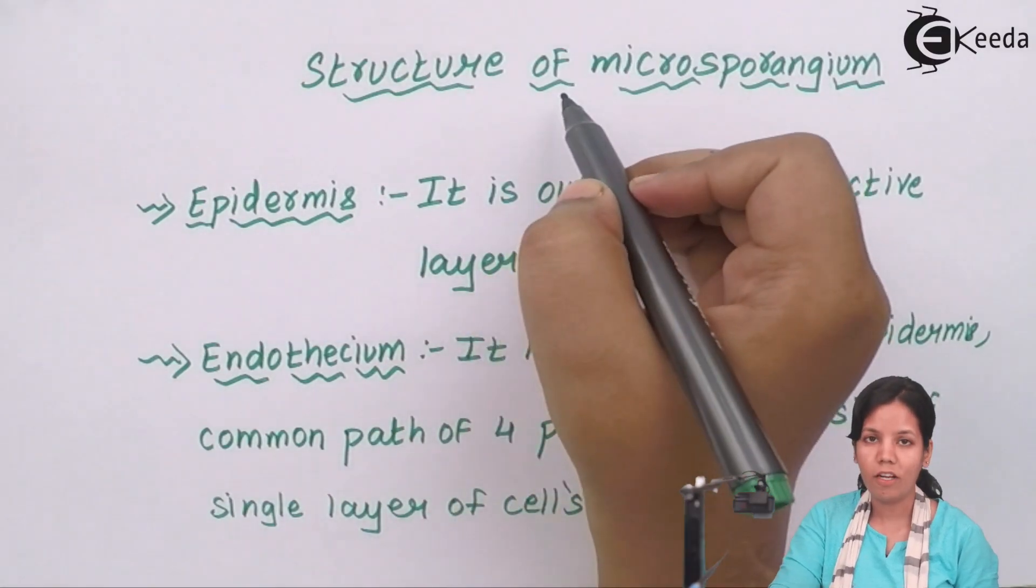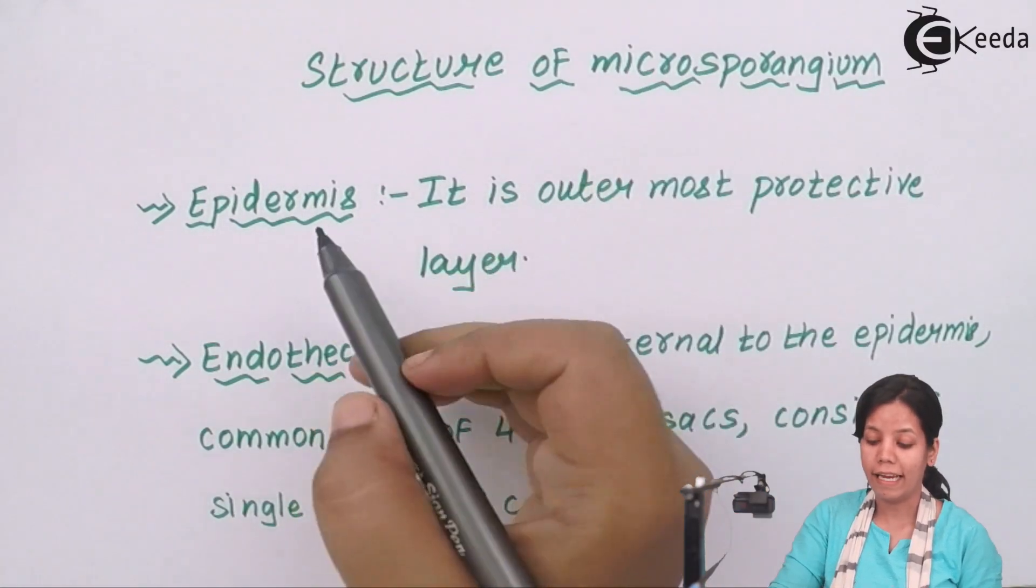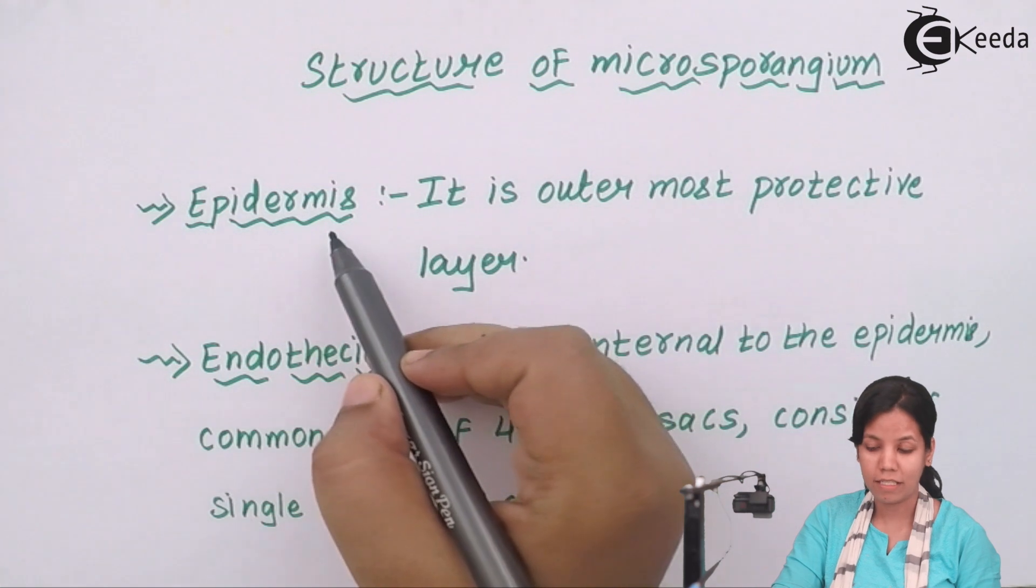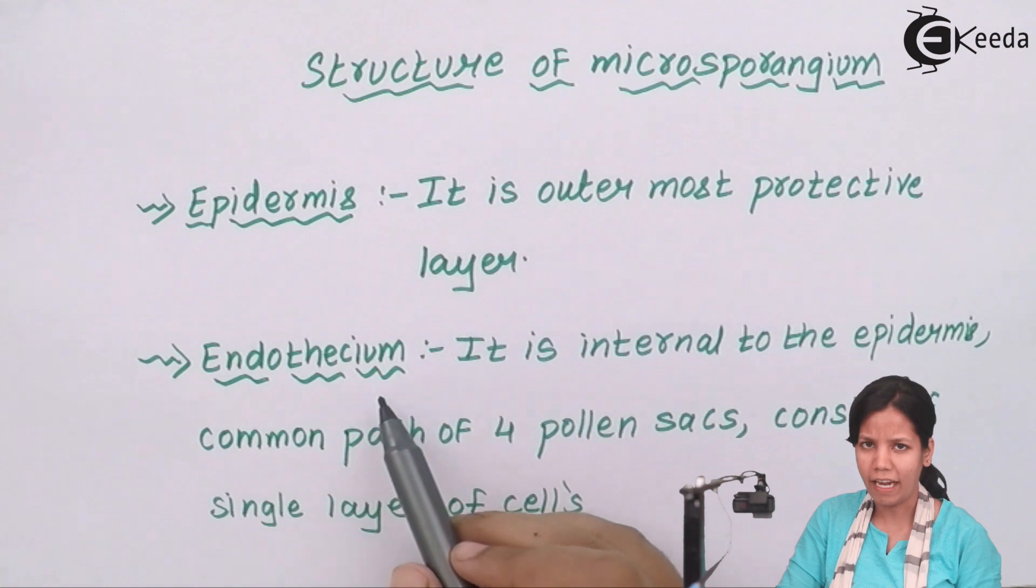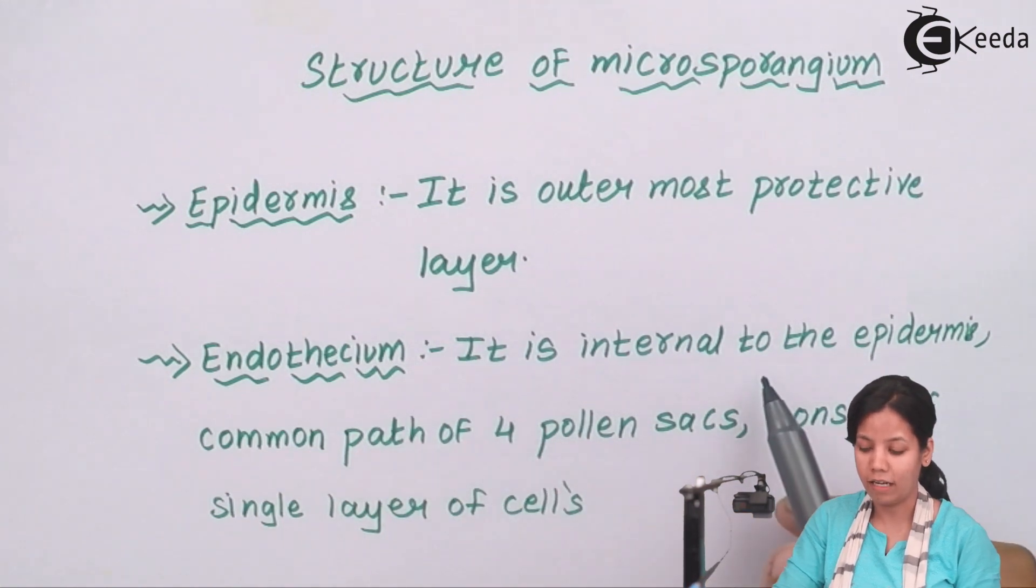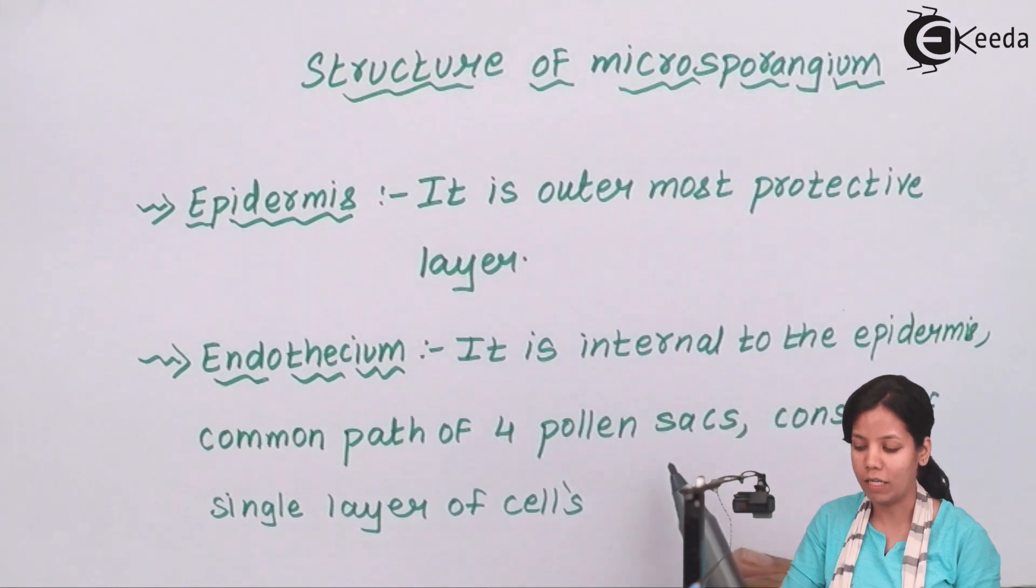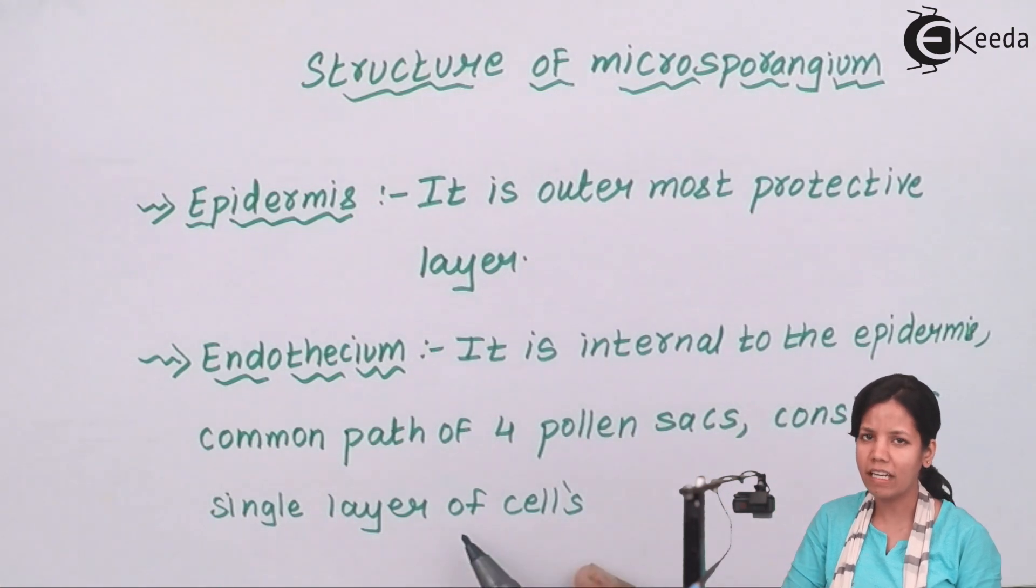Structure of Microsporangium: It consists of epidermis. Epidermis is basically the outermost protective part. It consists of endothecium which is the internal layer and endothecium provides the pathway for the pollen sacs. It consists of a single layer of cells.